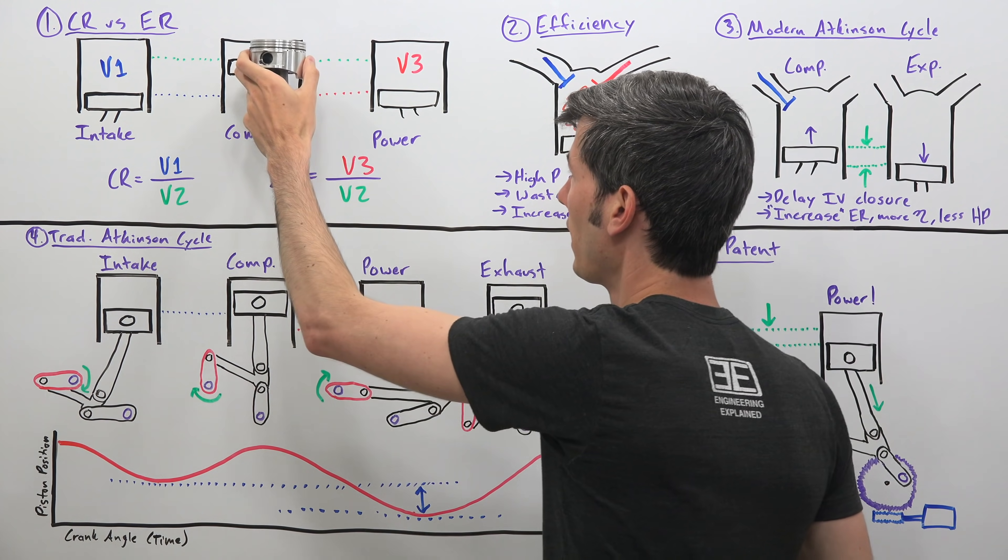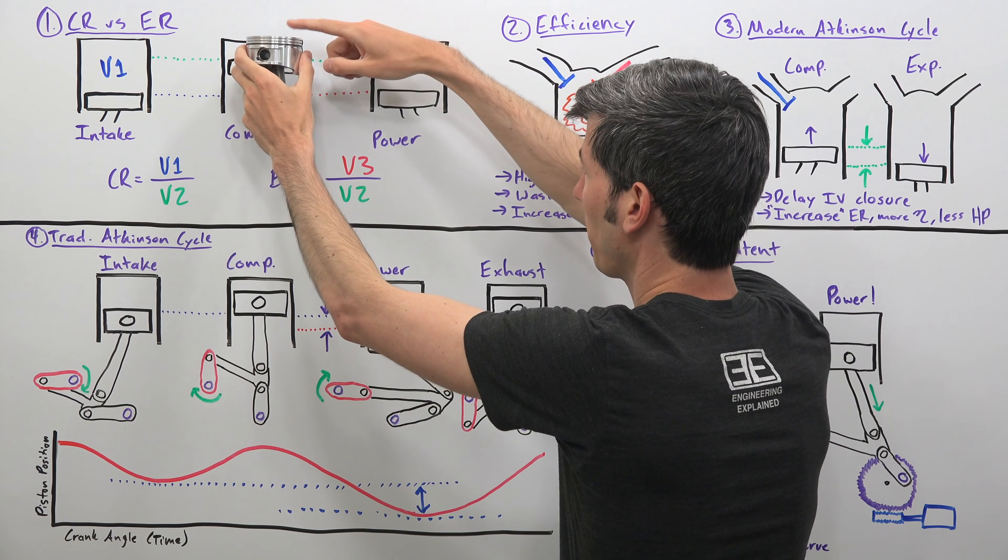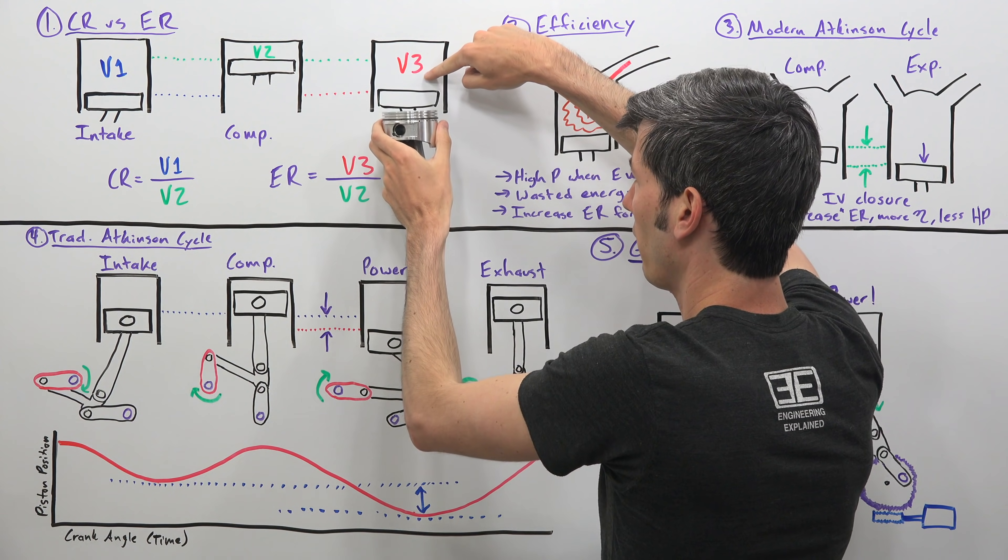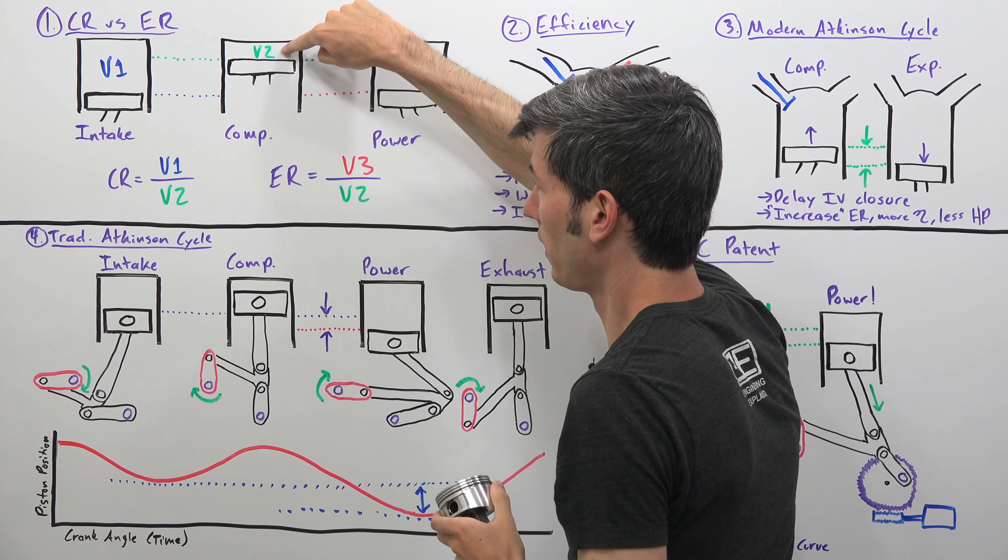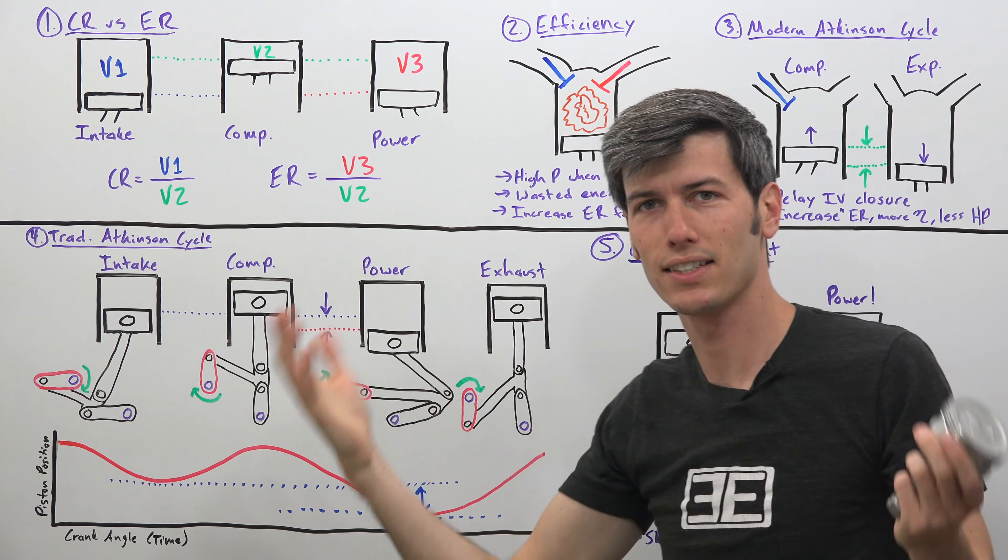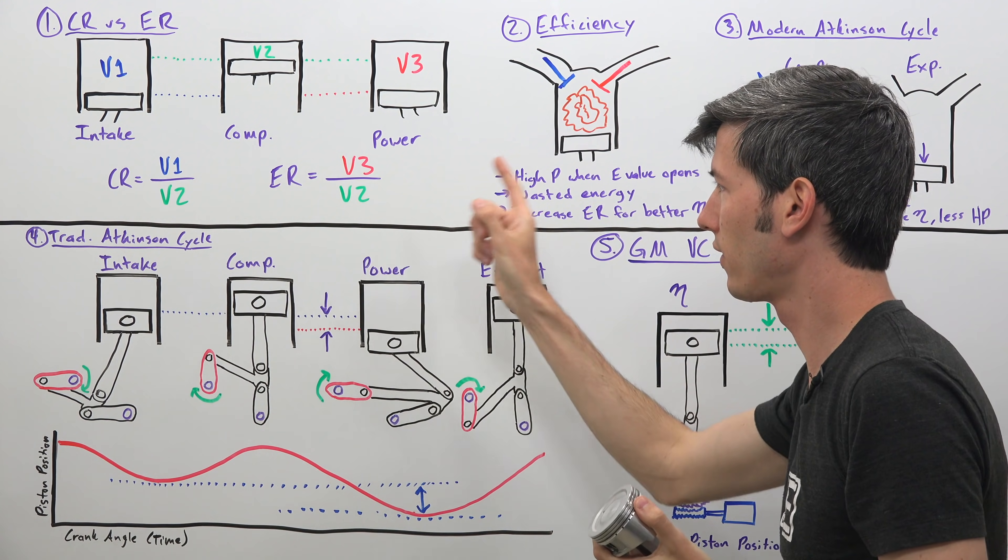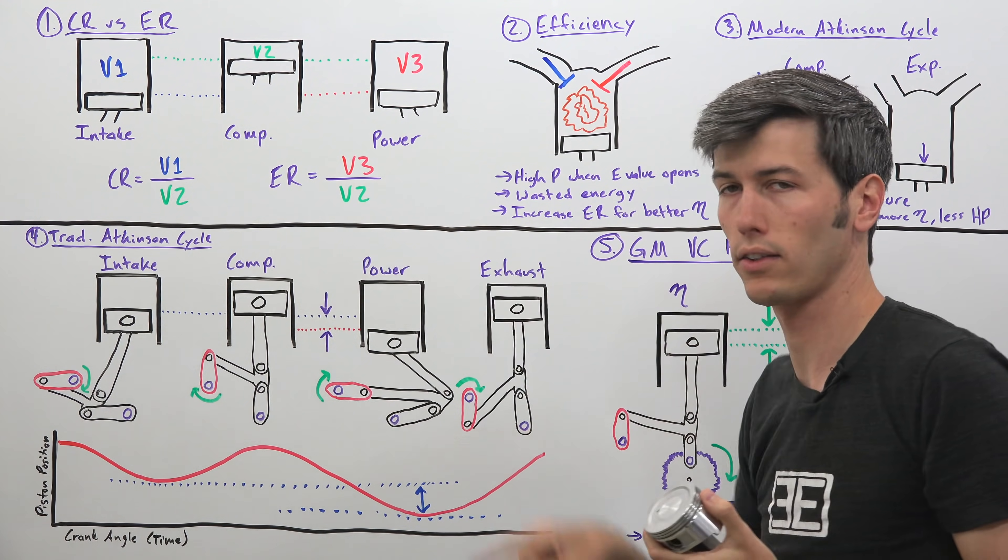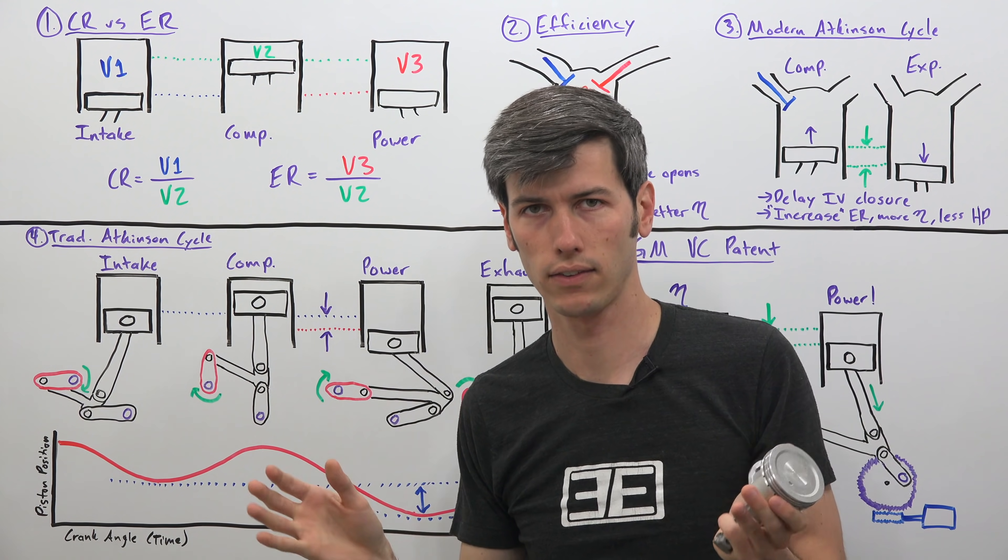Now your expansion stroke is then the volume after that piston goes down from the power stroke. So at the very bottom of its stroke, that volume divided by the volume when it's at the top of its compression stroke. And so as you can see in the typical engine, these are going to be the exact same. V1 is equal to V3. So the compression ratio and the expansion ratio are exactly the same.